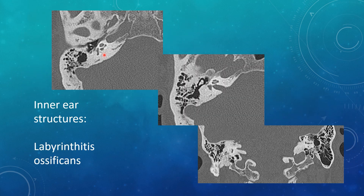For pathology of the inner ear structures, you can get labyrinthitis ossificans, which is related to a previous bout of meningitis. You get sclerosis of the cochlea or semicircular canals. Instead of a symmetric diameter of the basal turn of the cochlea, you can see it's sclerotic and narrowed. In the semicircular canals, instead of a nice horizontal canal, you see it's very thin and sclerotic — the appearance of labyrinthitis ossificans.